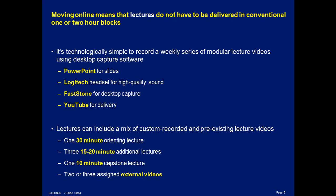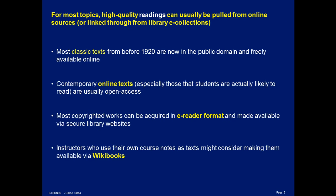I also like to assign one, two, or three external videos. There's lots of high quality short video on YouTube, or high quality longer video published by NGOs and other educational institutions, that can be used to supplement lecture material. For most topics, readings can also be pulled from online sources. First, almost every classic text from before 1920 is now in the public domain and freely available online. Second, contemporary texts are simply published online to begin with, and I really think we should be using a lot more contemporary writing written for the internet — it's the 21st century after all. If you do want to use copyrighted work, almost all copyrighted work is now available in e-reader format.